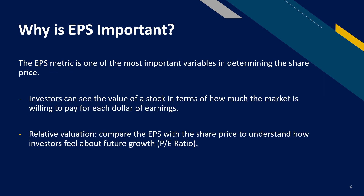The earnings per share metric is one of the most important variables in determining a share's price. It is also a major component used to calculate the price-to-earnings P/E valuation ratio, where the E in P/E refers to EPS. By dividing a company's share price by its earnings per share, an investor can see the value of a stock in terms of how much the market is willing to pay for each dollar of earnings.